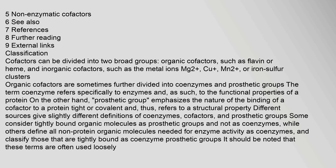Cofactors can be divided into two broad groups: organic cofactors, such as flavin or heme, and inorganic cofactors, such as the metal ions Mg2+, Cu, Mn2+, or iron-sulfur clusters. Organic cofactors are sometimes further divided into coenzymes and prosthetic groups. The term coenzyme refers specifically to enzymes and to the functional properties of a protein, while prosthetic group emphasizes the nature of the binding of a cofactor to a protein — tight or covalent — and thus refers to a structural property.